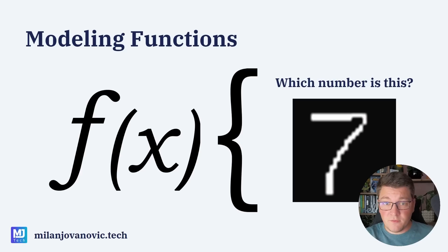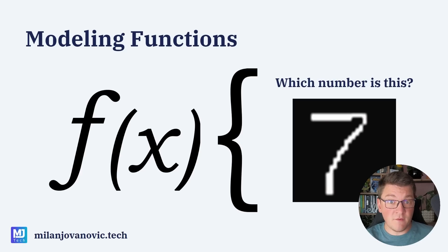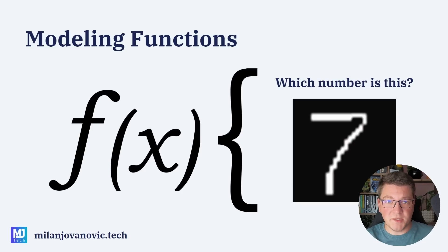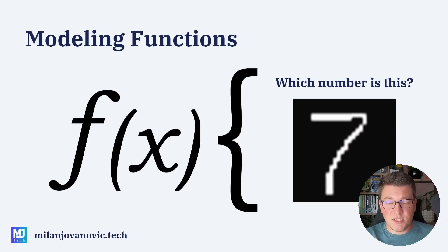What we are fundamentally doing with neural networks is modeling mathematical functions. Let's say I have a function that takes in an input image and tells me what number this is — this is what I want my neural network to do. And the question is, how do I get there?